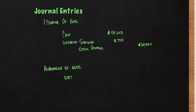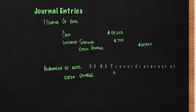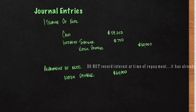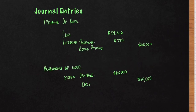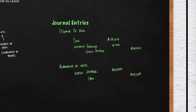Now let's do the second set of entries — 90 days into the future. We're going to debit Notes Payable for the entire $60,000 to clear out that liability. Then we credit Cash for $60,000. Notice that we did not debit Interest Expense again, because we already recorded that at the beginning. And that's a discounted note.